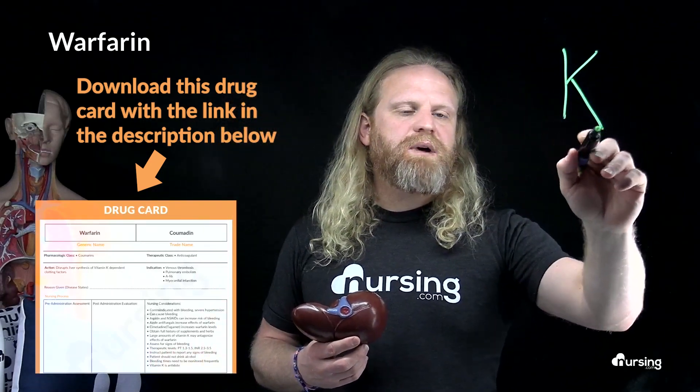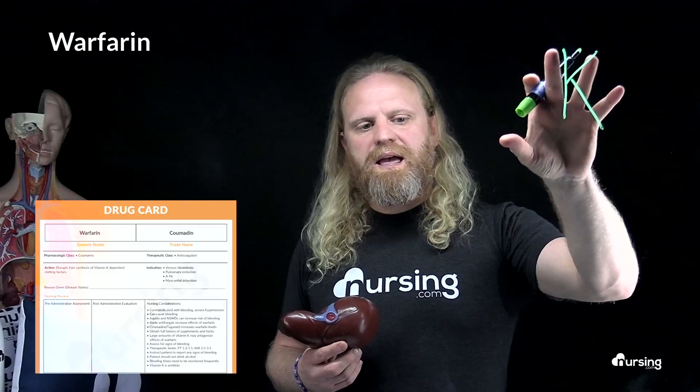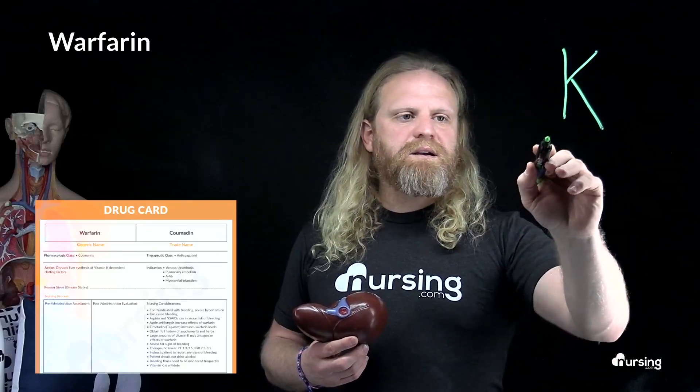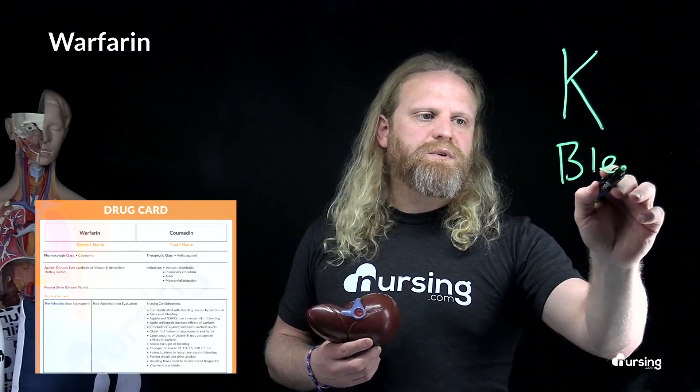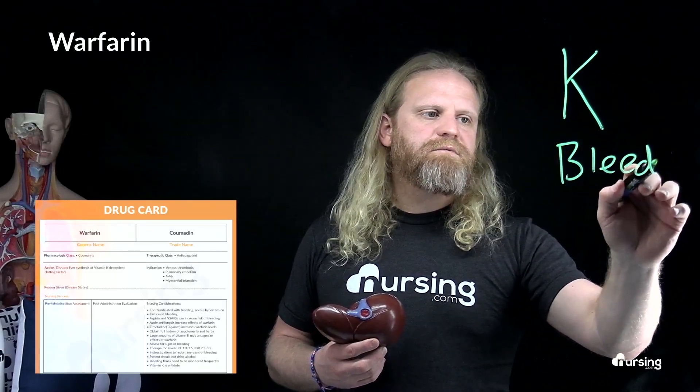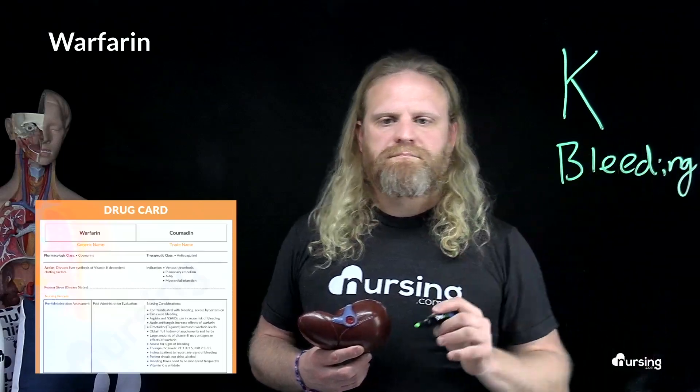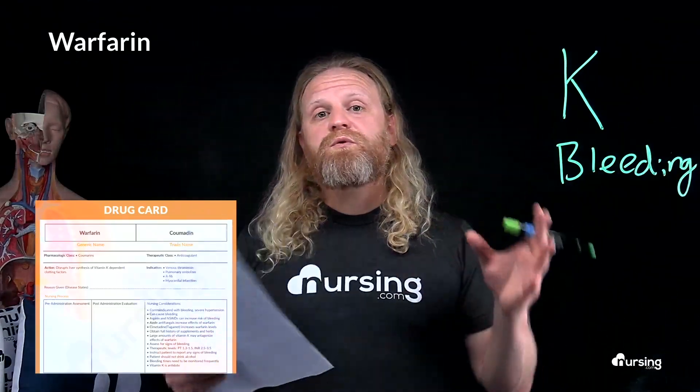Warfarin is an anticoagulant. It works by disrupting the liver synthesis of vitamin K-dependent clotting factors. The first thing to keep in mind is vitamin K, and the next thing is bleeding — we're disrupting these clotting factors.